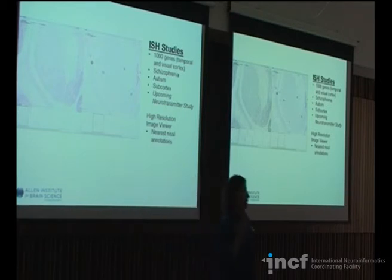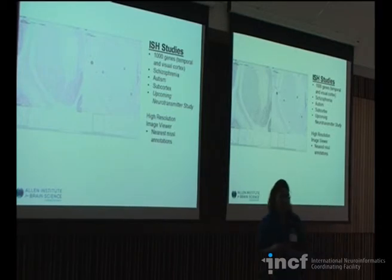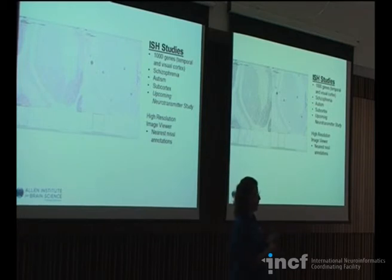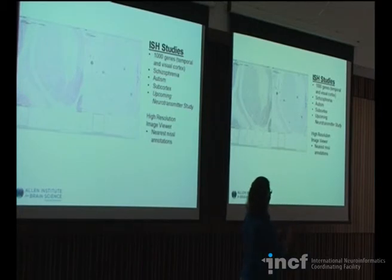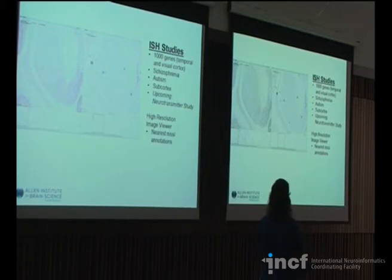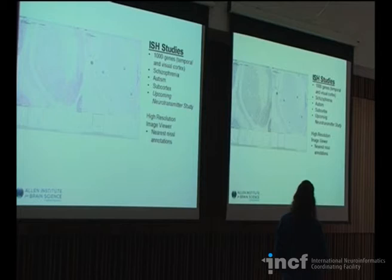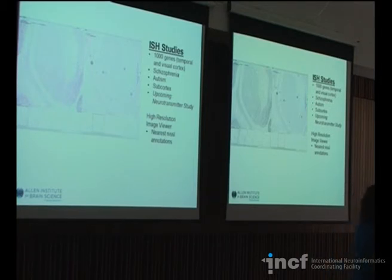With the mouse ISH studies, you have the ability to bring up the reference atlas so that you can always see where you are. There are a lot of reasons why that doesn't work with the human — all human brains have individual variations and you can't necessarily map back to a single reference atlas. What you can do is map to the nearest Nissl image that has been annotated. For expediency's sake, we use what we call hot spotting — a spot on structures that you hover over to identify what that structure is, and it's set so you can sync two images.